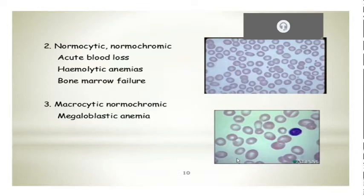Then you have macrocytic normochromic anemia, or macrocytic in the form of megaloblastic anemia, and that can be due to deficiency in folate or vitamin B12. Other reasons can be thyroid abnormalities, liver disease, bone marrow infiltrative disease, or bone marrow hyperproliferations.